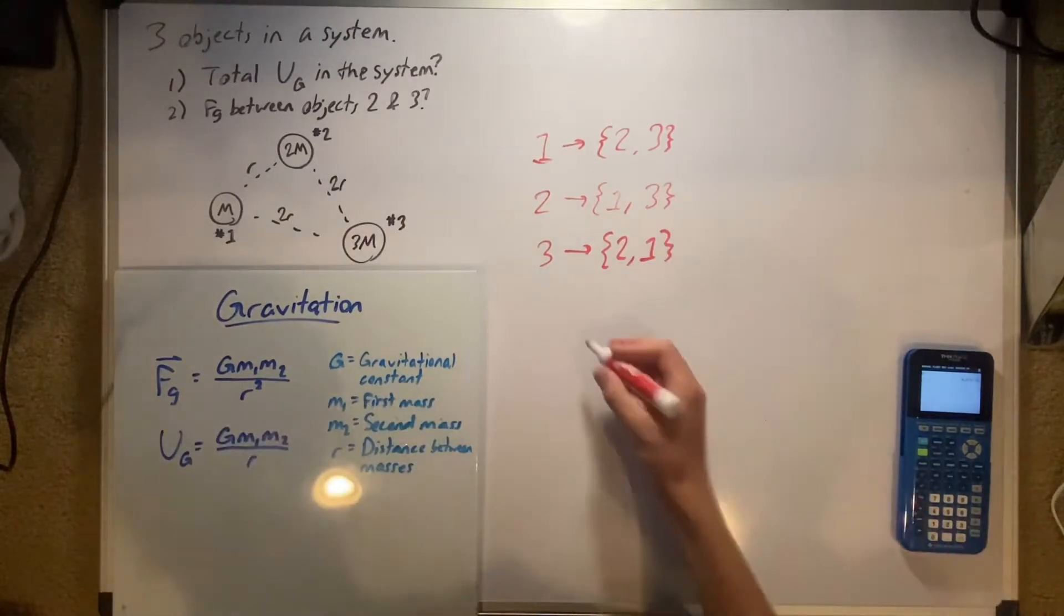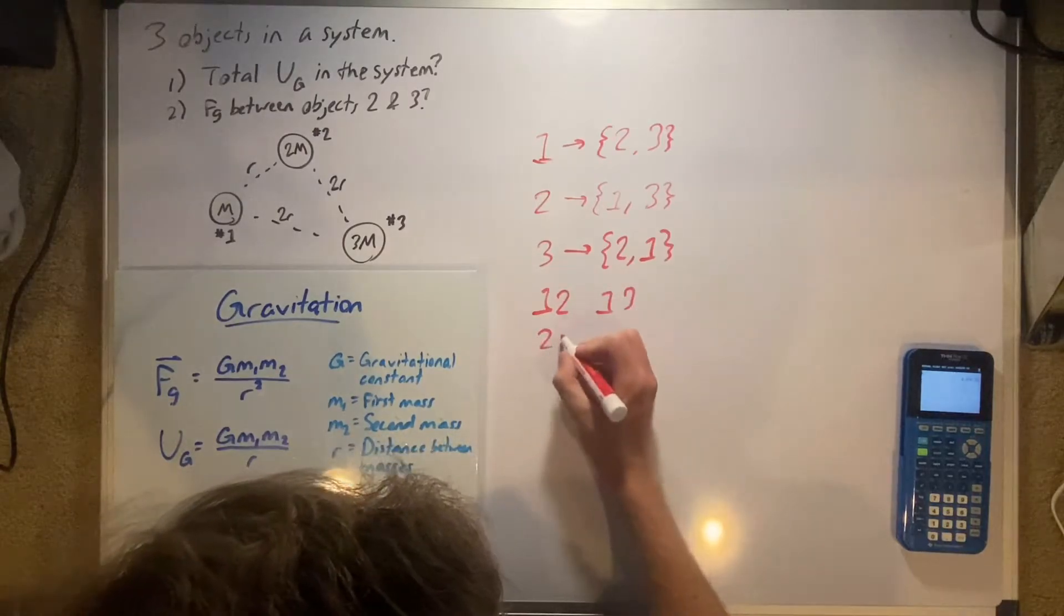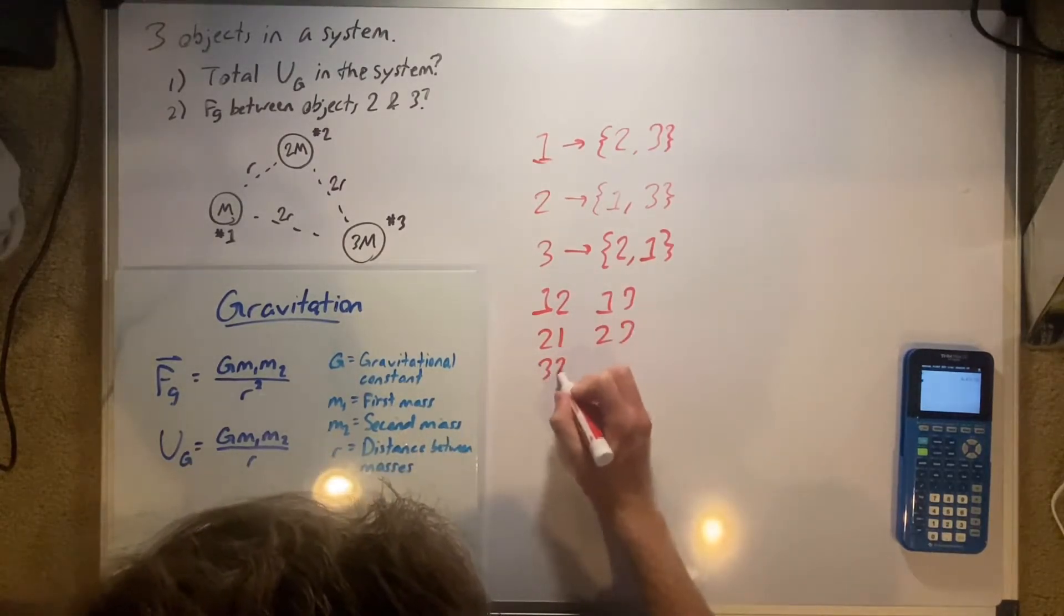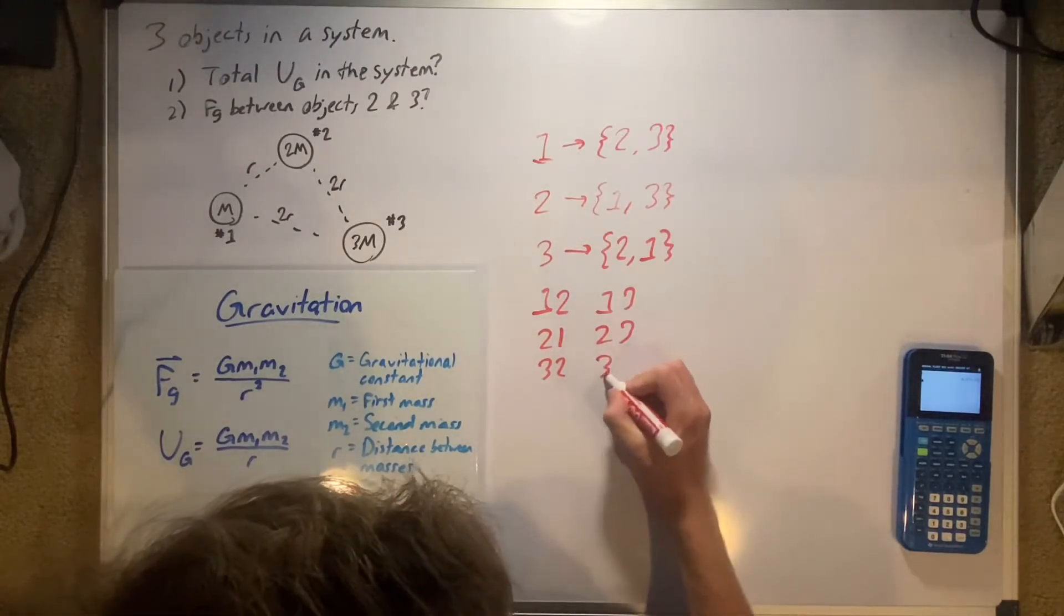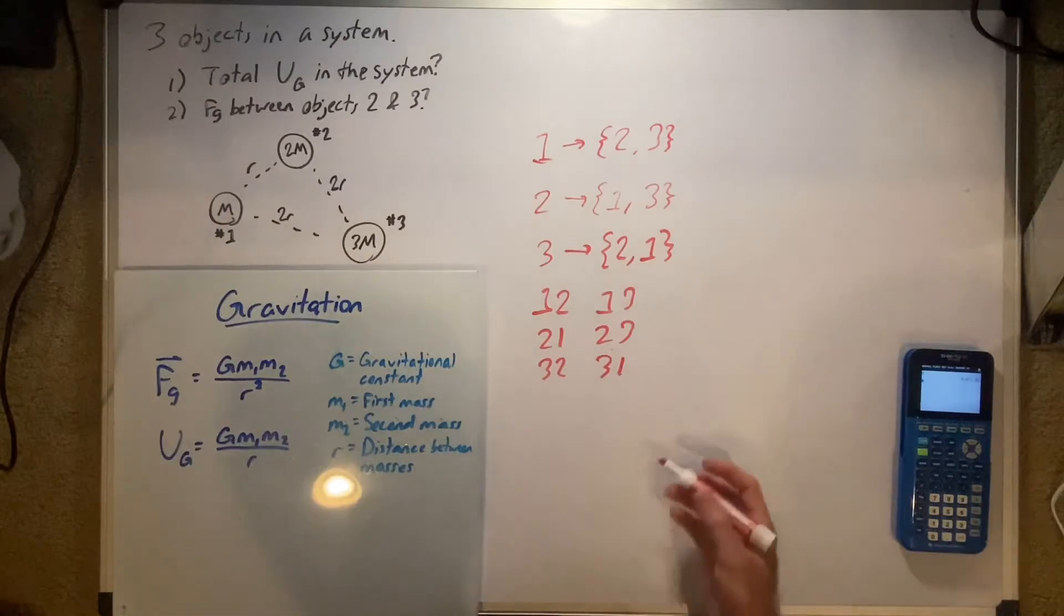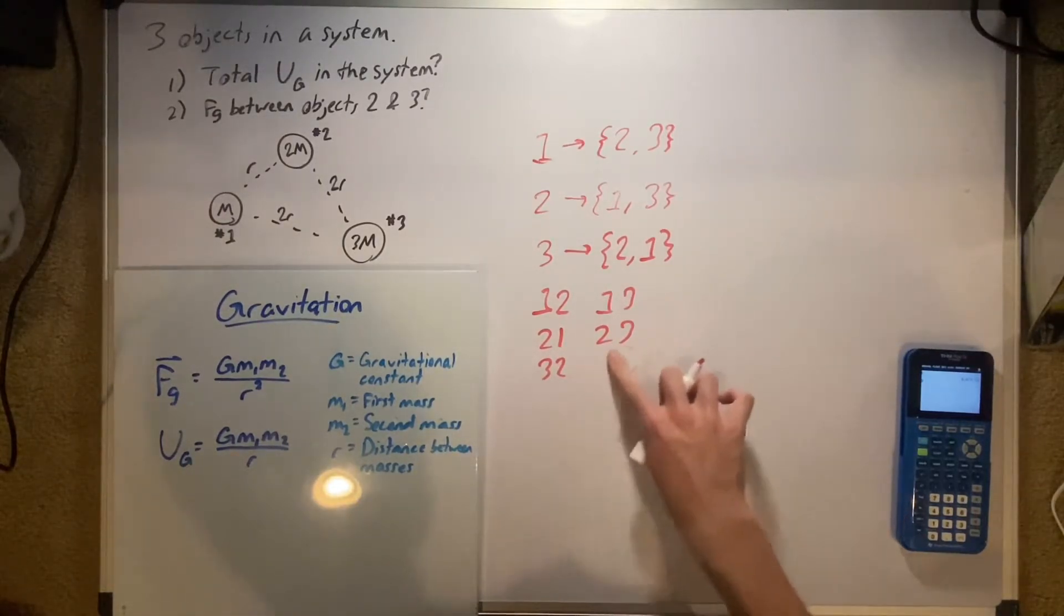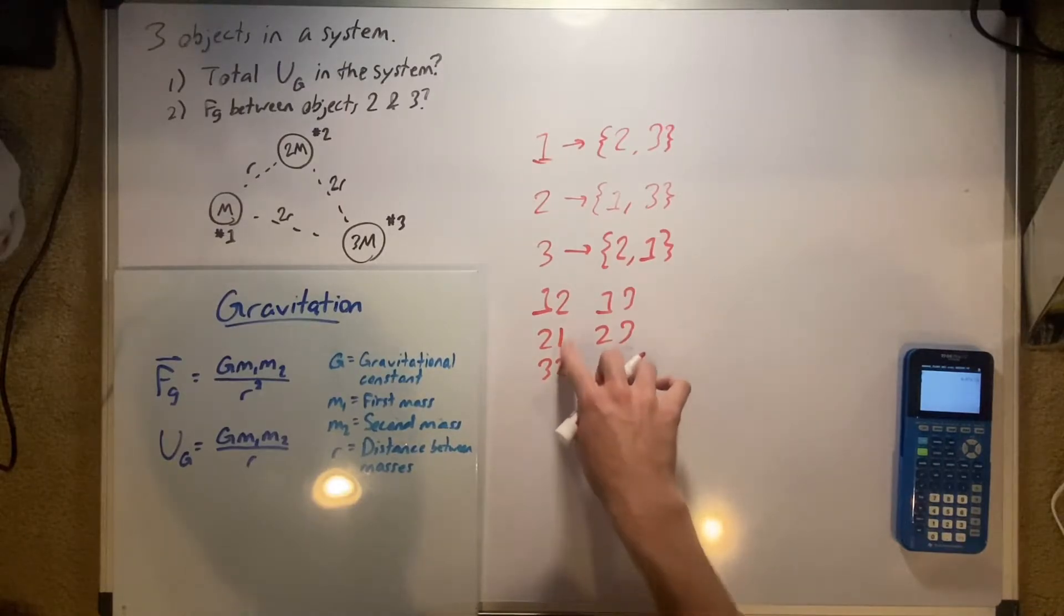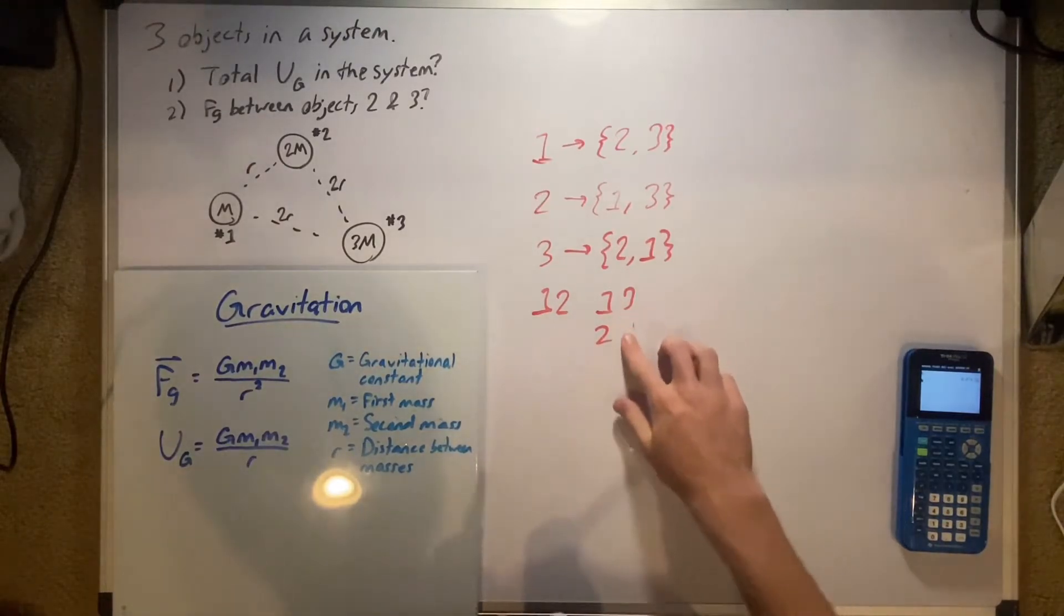And then three can interact with two and one. So then we can make pairs with these: we have one and two, one and three, two and one, two and three, three and two, three and one. And then we'll eliminate all the repeats. One and three and three and one are repeats, so we'll eliminate those. Two and one, that's a repeat there. Two and three, three and two, yes it is. So we have our three pairs here, we have three interactions.